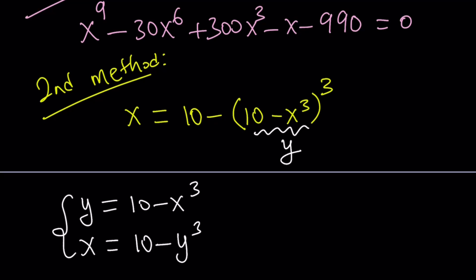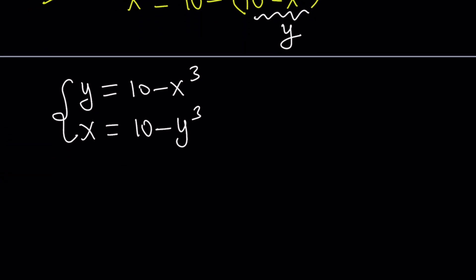But at the same time, we're also saying x equals 10 minus y cubed. And this is amazing. Why? Because this is a really nice system. That's good enough, right? So we can solve this system. How? By way of subtraction.